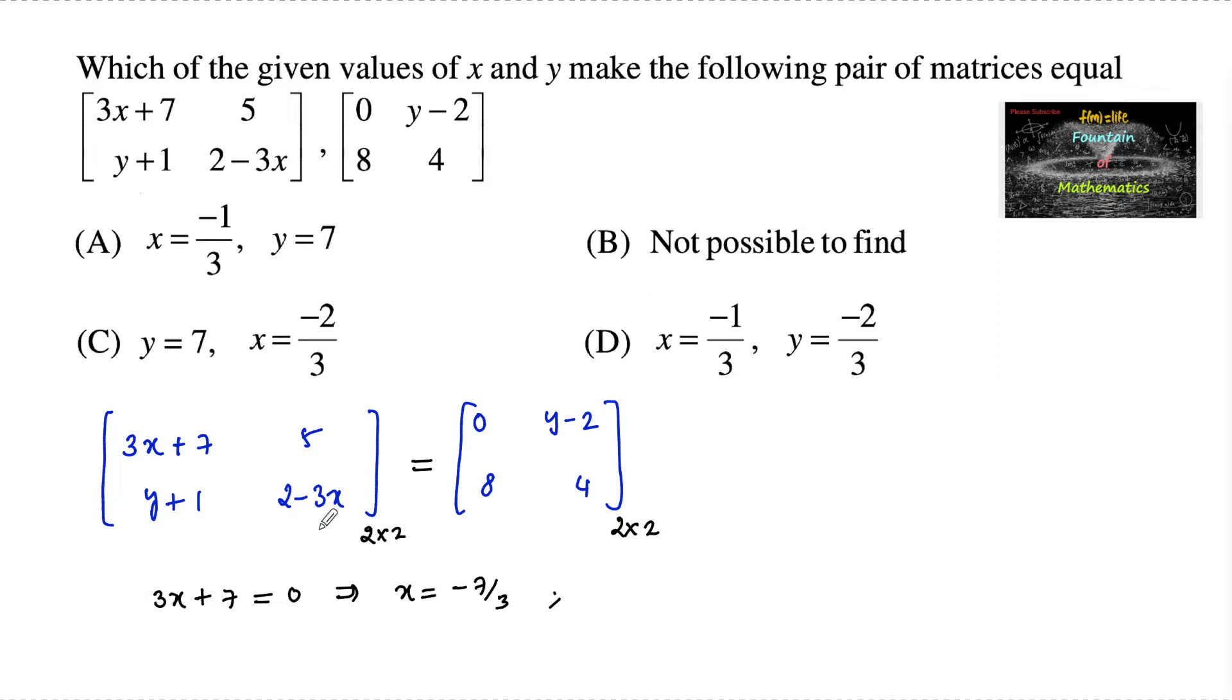And if we consider this element, 2 minus 3x equals 4. So we get 3x equals 2 minus 4, or x equals minus 2 upon 3.